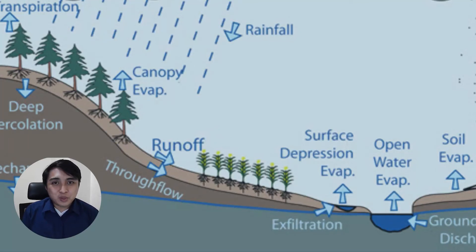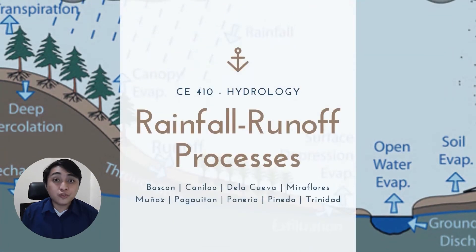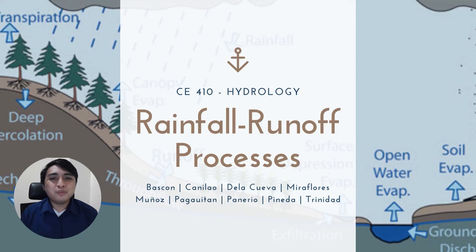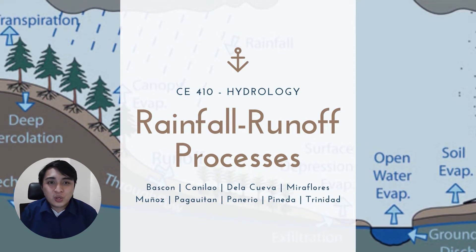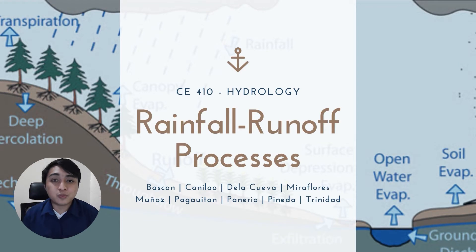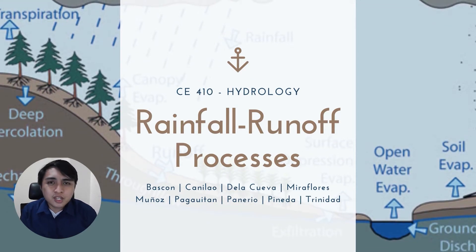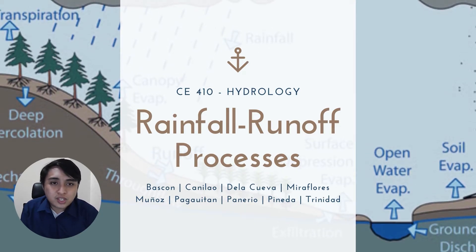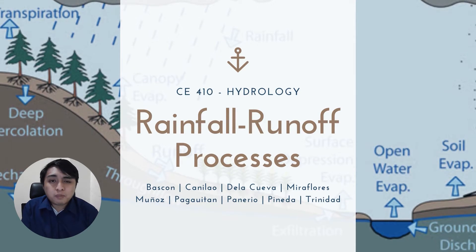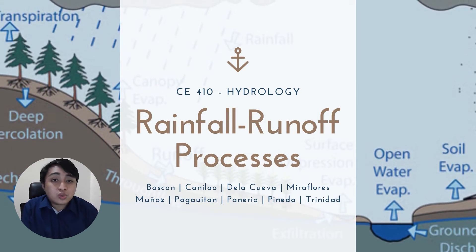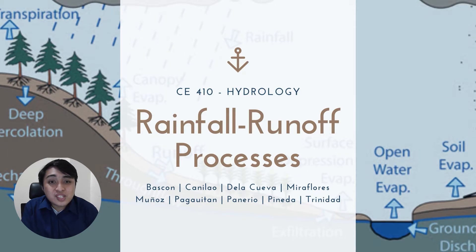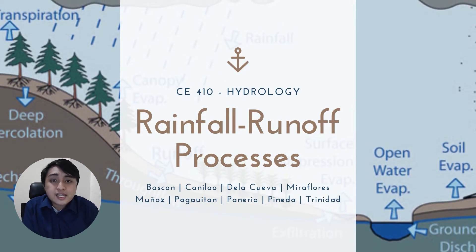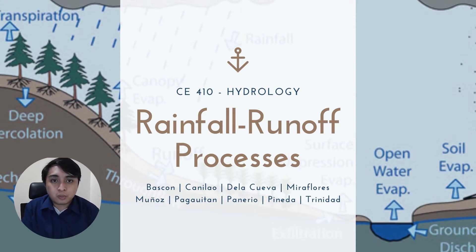Good day everyone. Me and my groupmates will be discussing Module 4.1, Rainfall Runoff Processes. An important question in hydrology is how much stream flow occurs in a river in response to a given amount of rainfall. To answer these questions, we need to know where water goes when it rains, how long does the water reside in a watershed, and what pathway does the water take to the stream channel. These are the questions addressed in the study of rainfall runoff processes, or more generally known as surface water input runoff processes.